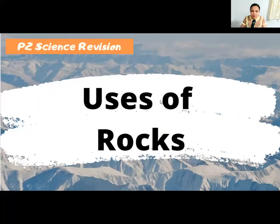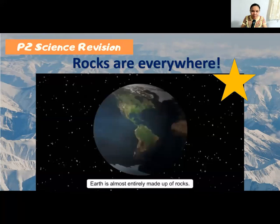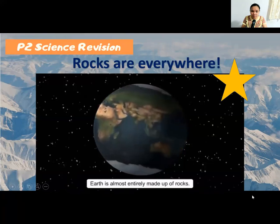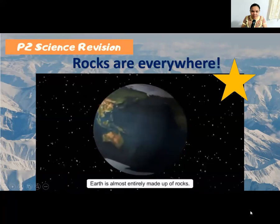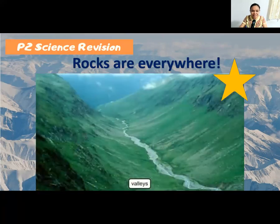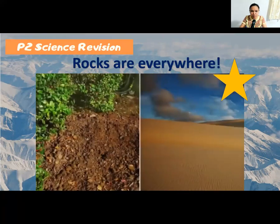What are the uses of rocks? From our textbook, we have learned that we can find rocks almost everywhere. Earth is almost entirely made up of rocks — everywhere, including hills, mountains, and valleys. Stones and pebbles are made from rocks; they are just small ones.